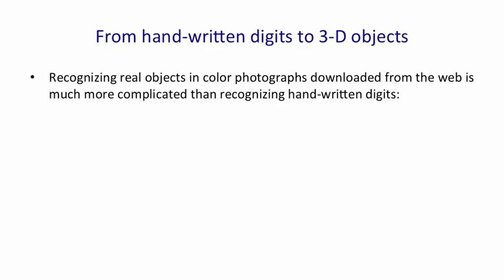People worked on MNIST for many years, gradually improving the ability of these networks to recognize handwritten digits. Many computer vision researchers thought this was a waste of time if you wanted to recognize real objects in color images, because they thought the lessons learned from MNIST would not generalize to that domain. That was a fairly reasonable thing to think.